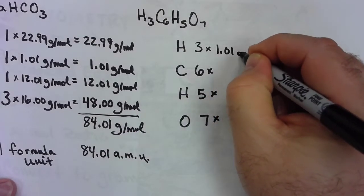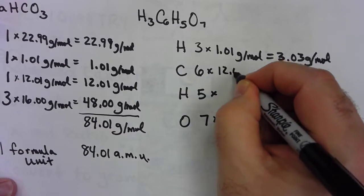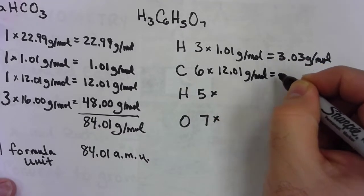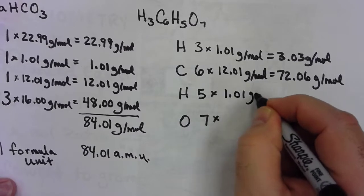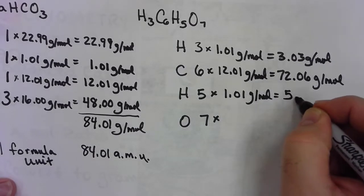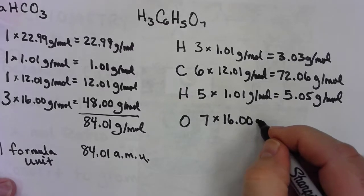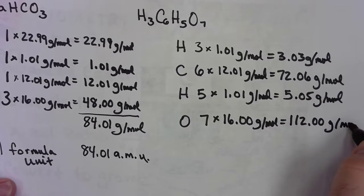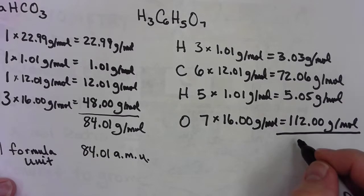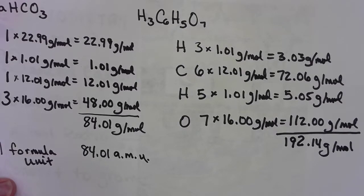3 times 1.01 will be 3.03. 6 times 12.01 is probably going to be 72.06. 5 times 1.01. And 7 times 16 is 112.00 grams per mole. I'm going to add those numbers all together. I get 192.14 grams per mole. And it's just that simple. That's all we have to do. That's all there is to it.